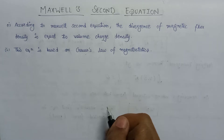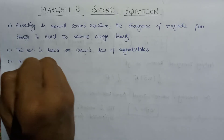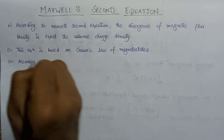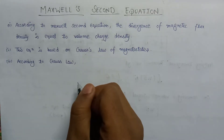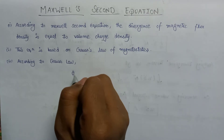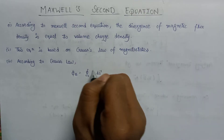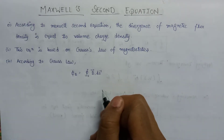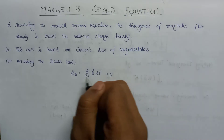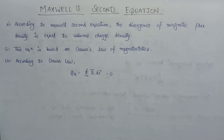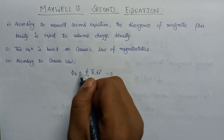Now if we discuss Gauss's law of magnetostatics, then according to Gauss's law, the surface integral — that is the integration over a closed surface of B·dS — is equal to zero. This is the mathematical representation of Gauss's law.